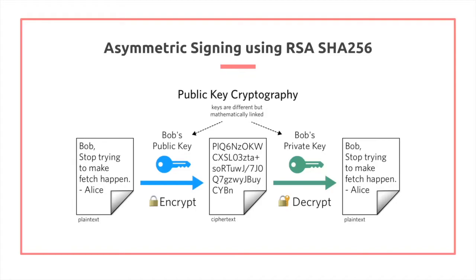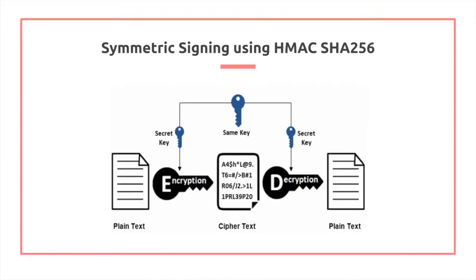For public key encryption, which is the asymmetric version, the public key can be distributed to everyone. The public key and the private key are mathematically linked, so only certain parties can encrypt or decrypt. In the case of JWT, signing is done with the private key. For HMAC-SHA256, the secret key can be shared between both parties and used to both encrypt and decrypt messages.